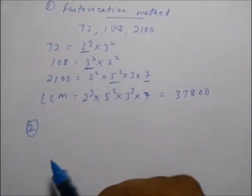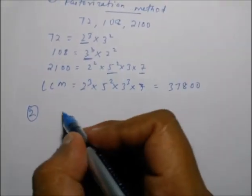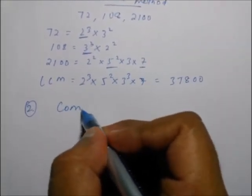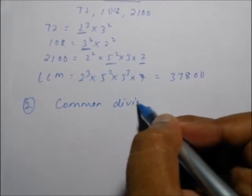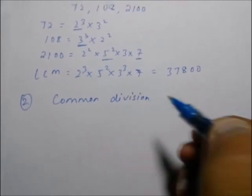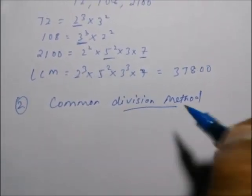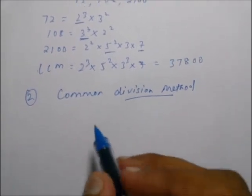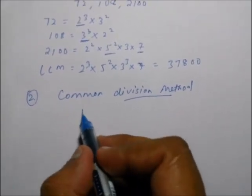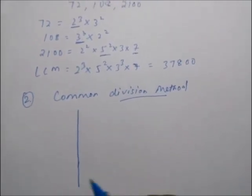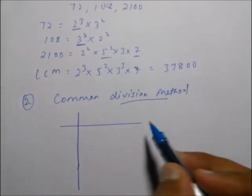Another method to calculate the LCM is the common division method. In this method, we divide each number progressively by prime factors.